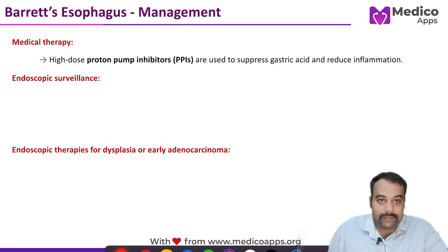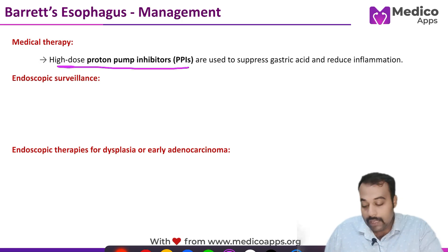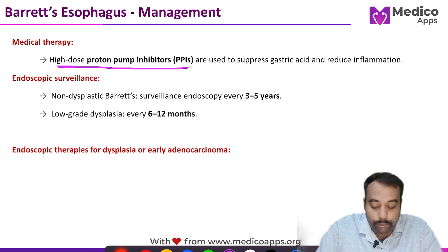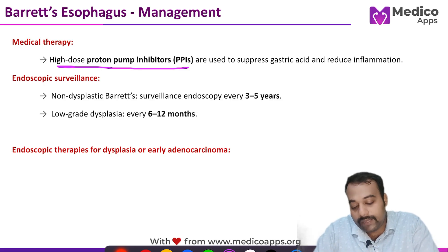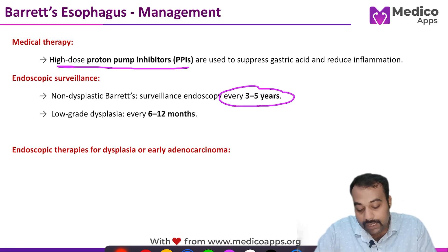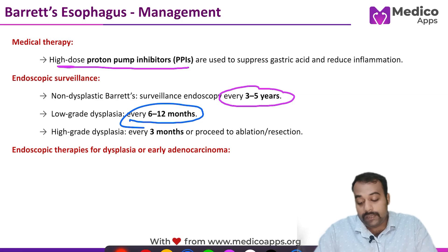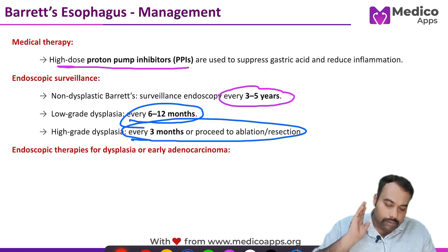For medical therapy, high-dose PPI is used to suppress gastric acid and inflammation. Endoscopic surveillance protocols recommend: every three to five years for non-dysplastic Barrett's; every six to twelve months for low-grade dysplasia; and every three months — or ablation/resection therapy — for high-grade dysplasia.